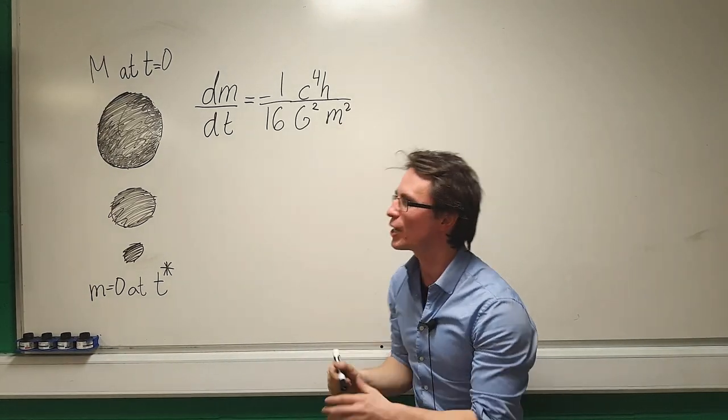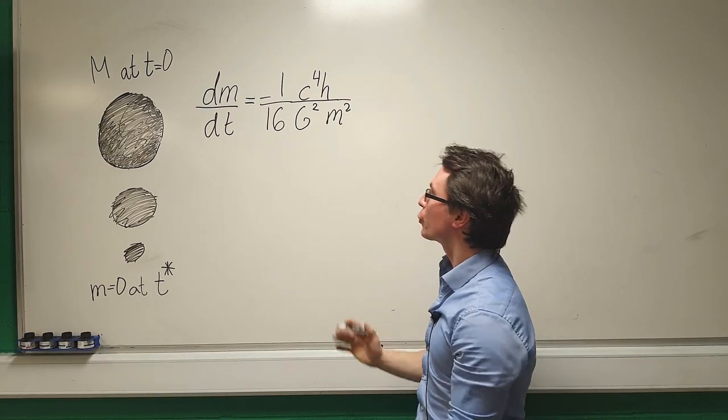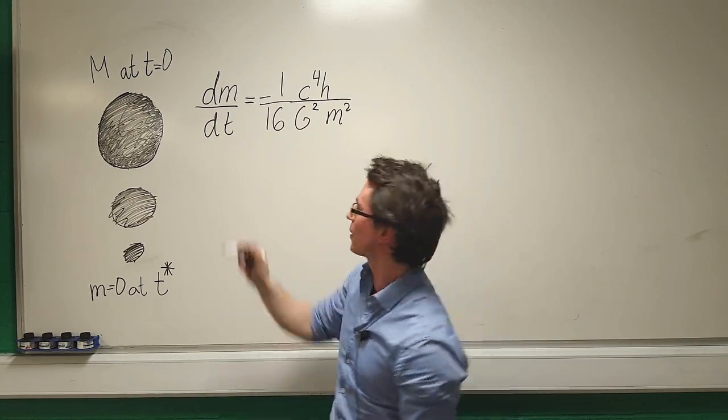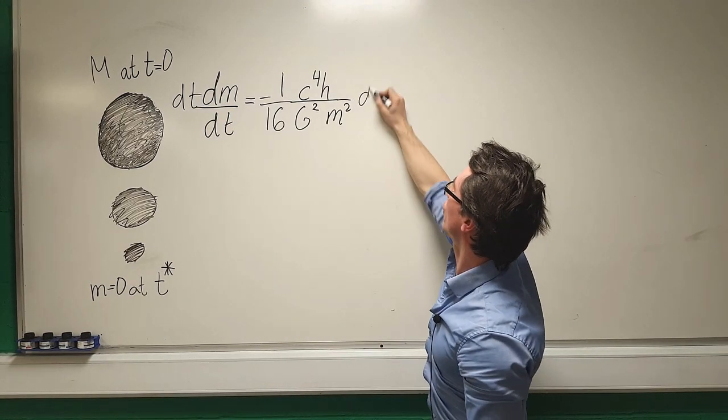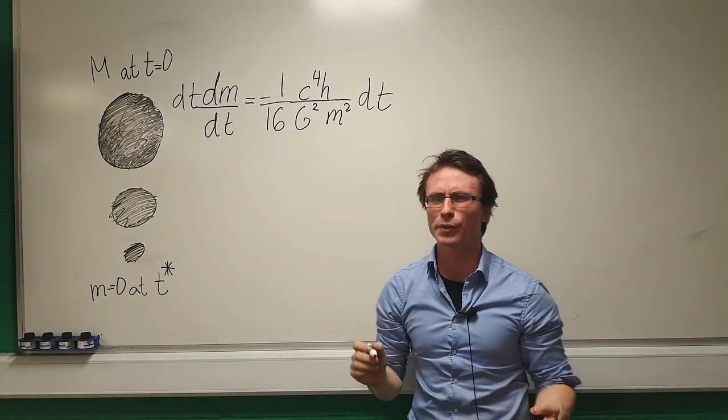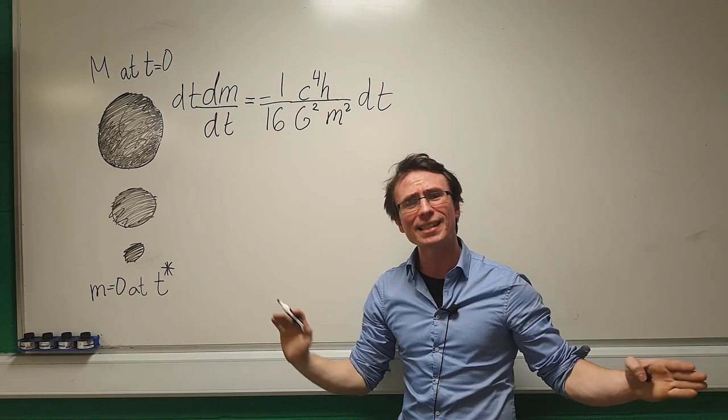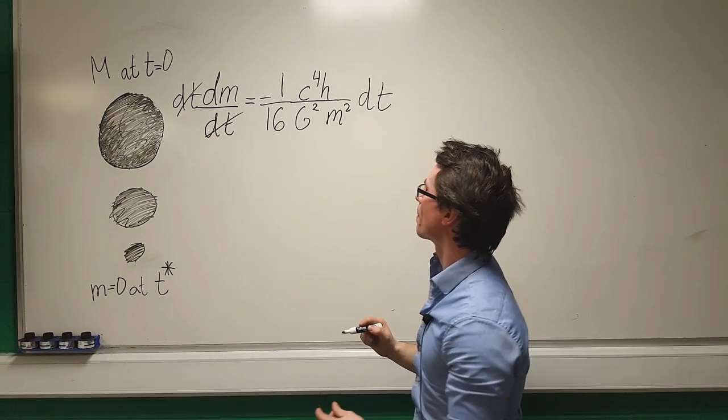Now looking at this equation, we can use separation of variables to solve this. I'm going to multiply both sides of this equation by a factor of dt. I'm going to have a dt here, then also a dt across here. Now I can do one of my favorite things in calculus and that is cancelling terms out of an equation.